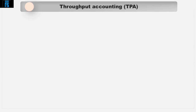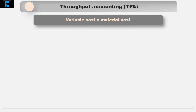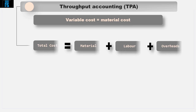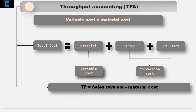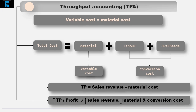Throughput accounting assumes that the only totally variable cost is materials, and that there is some element of fixed costs within labour and overheads, and as such only material costs are considered within the throughput calculation. The throughput figure is therefore simply sales revenue minus material costs. In order to maximise throughput and therefore profit, we want to maximise revenues and minimise conversion and material costs.